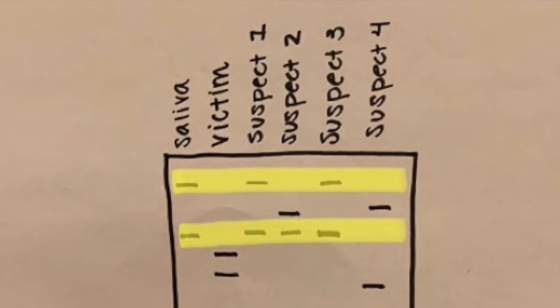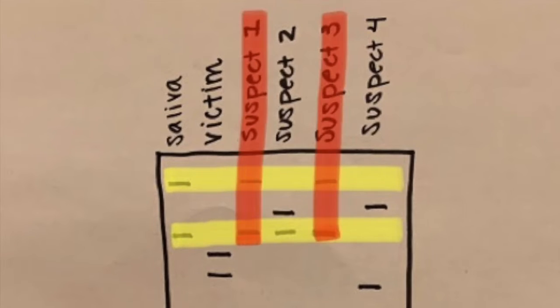Now we must go further and look at the bottom band for saliva. Here, Suspect 1, 2, and 3 all have this band in common, but only 1 and 3 share both the top and bottom bands. So there are potential suspects, and we will need to see who matches at locus 2 to find out who did it.